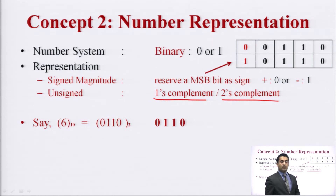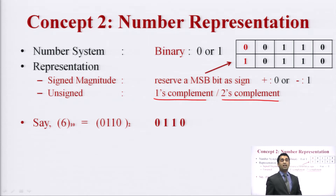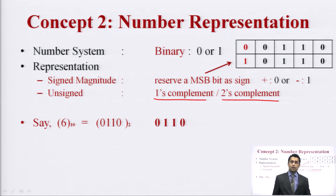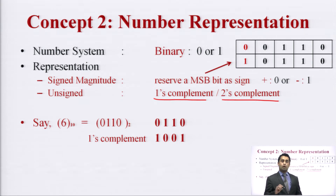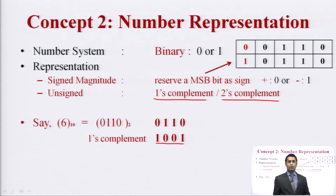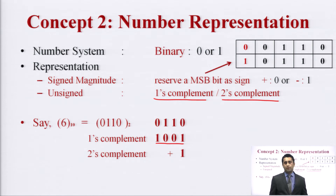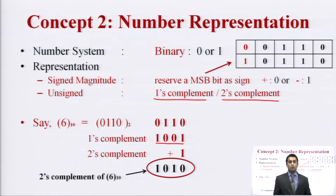This is an important point for exam questions: one's complement and two's complement are used when talking about negative numbers. For example, we convert decimal 6 to binary and compute its one's complement by inverting all bits bitwise. For two's complement, we add 1 to the one's complement to get the two's complement representation of 6.